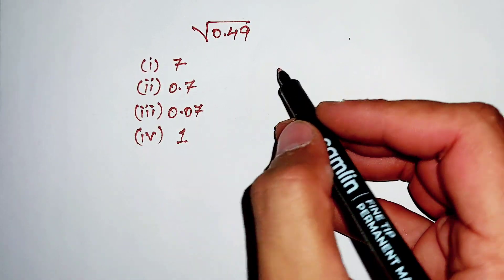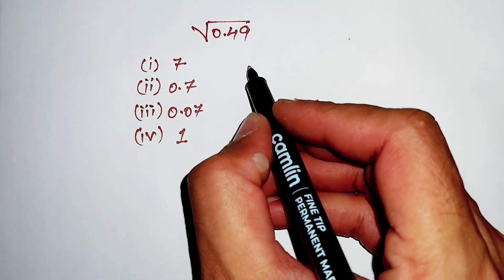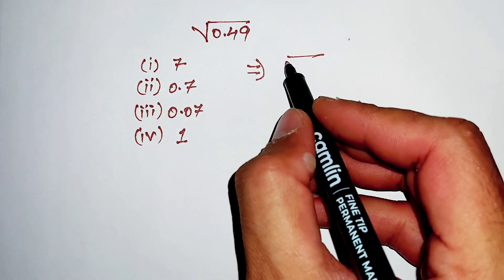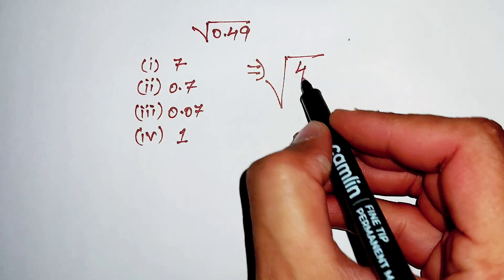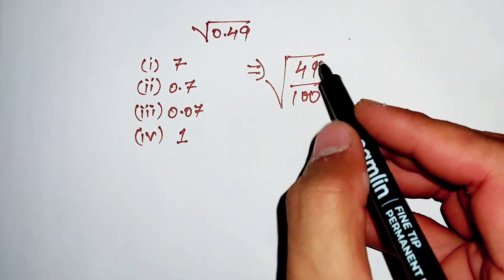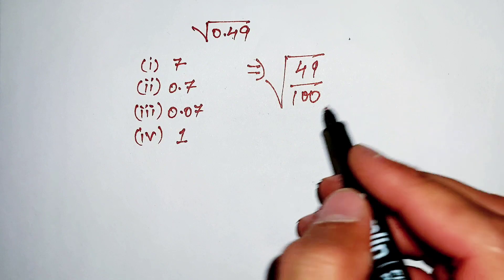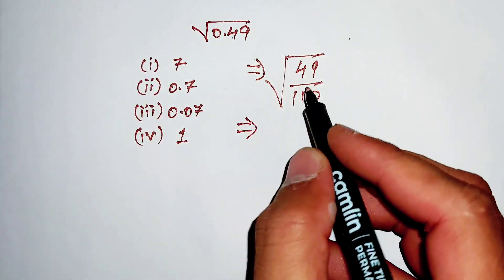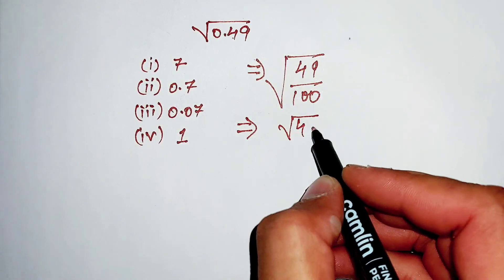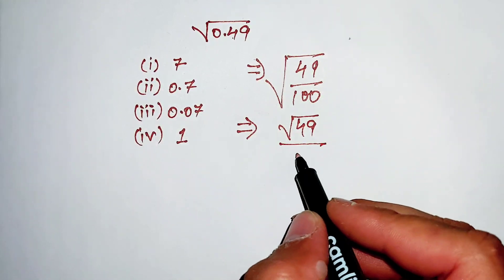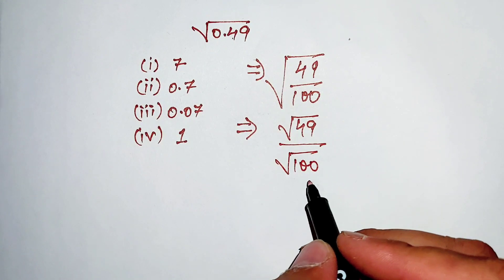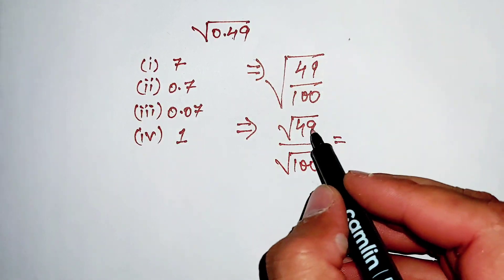First of all, we can rewrite 0.49 as 49 divided by 100. These are the same. Further, this can be rewritten as square root of 49 divided by square root of 100.